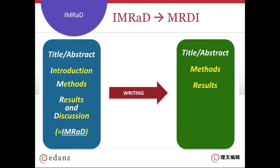Your results can then be compared with those of other researchers in the discussion section, where you interpret and explain your findings. After you reach your conclusion, you can write a short, focused, and strong introduction to explain what the reader needs to know, so that they can then clearly understand your methods, results, and conclusion. And after all this, don't forget to revise your title and abstract at the end. As the body of your paper has undergone multiple revisions, it's important to make sure that your final abstract and title accurately represent the current body of work.